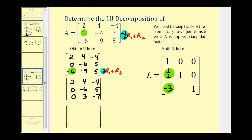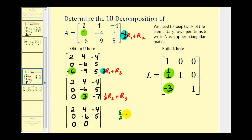For the last step, to obtain a zero in row three, column two, we'll add one half of row two to row three. The first two rows stay the same. One half of zero plus zero is zero; one half of negative six is negative three, plus positive three is zero; one half times five is five halves, plus negative seven is negative fourteen halves, which is negative nine halves. So that element is negative nine halves. Our multiplier was positive one half, so row three, column two of the lower triangular matrix is the opposite of positive one half, which is negative one half.